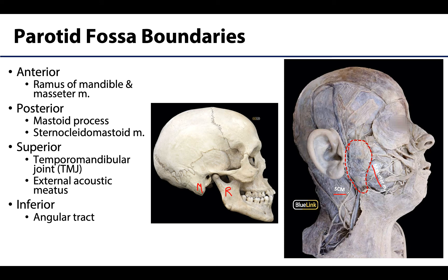The superior boundaries include the temporomandibular joint, which I'm circling right here, as well as the external acoustic meatus which is located right here. You can see on this image of the parotid gland on this donor that the parotid gland actually extends a little superior to that general area. This is an important concept, as there is always variation between individuals, and these boundaries are just representations of the most typical location of the parotid gland.